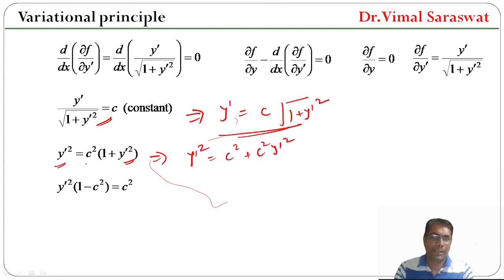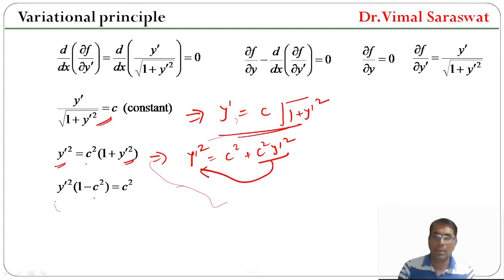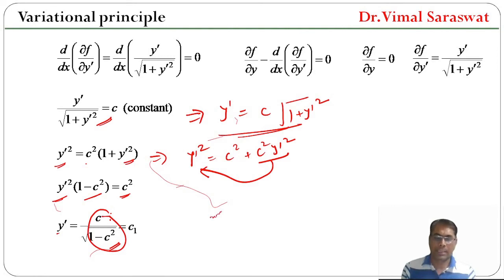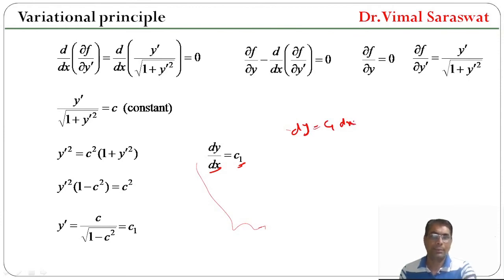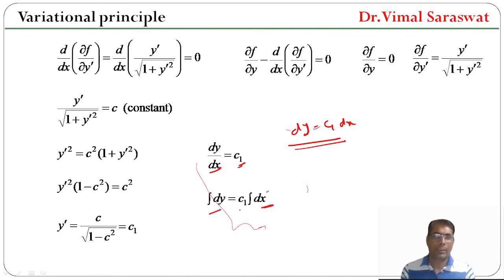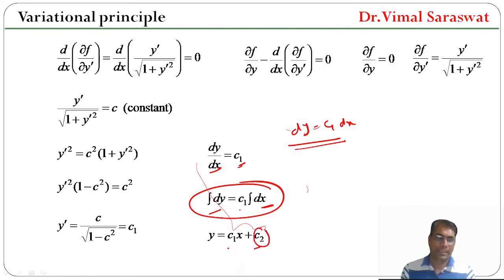Rearranging: y'²(1 − c²) = c², so y' = c / √(1 − c²). Since c is constant, this expression is also constant, denoted c1, giving y' = c1. Since y' = dy/dx, we have dy = c1 dx. Integrating both sides yields y = c1x + c2, where c2 is the constant of integration.